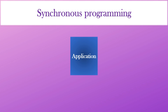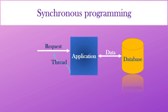Let's understand what happens with synchronous operations with an example. Let's say we get a request to fetch all the tutorial details from a database. In that case, the application will assign a thread to handle this request. In synchronous programming, even if the next request arrives, the thread will not handle that request until the current request has been completed. Even if fetching data from the database takes some time, the thread will not handle another request — it will wait for that request to complete.